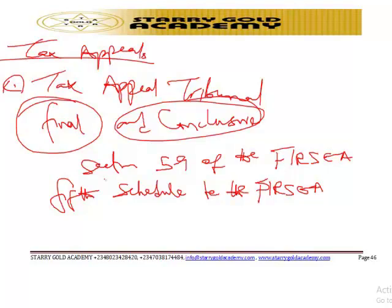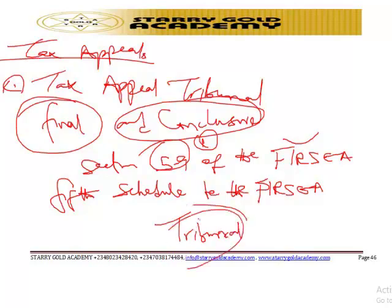According to the Fifth Schedule pursuant to Section 59(1) of the Federal Inland Revenue Service Establishment Act, there shall be established a Tax Appeal Tribunal to exercise the jurisdiction, powers, and authority conferred on it by or under the schedule. The minister may by notice in the Federal Gazette specify the number of zones, matters, and places in relation to which the tribunal may exercise jurisdiction.